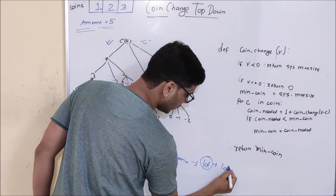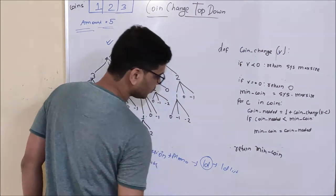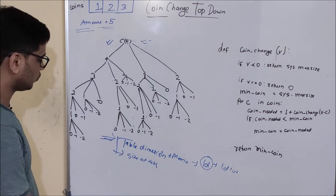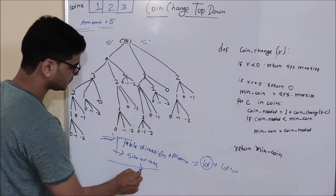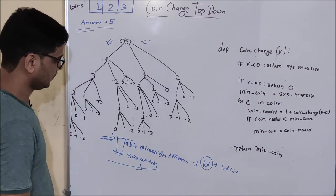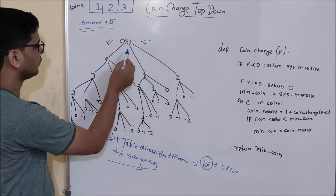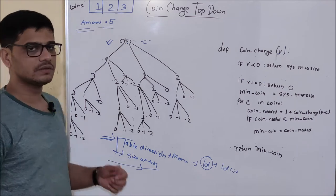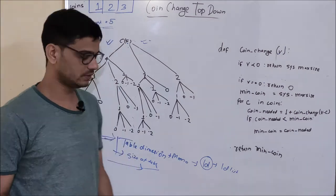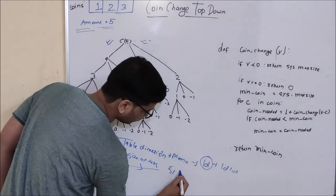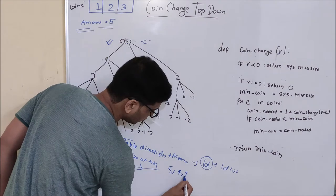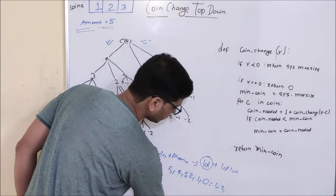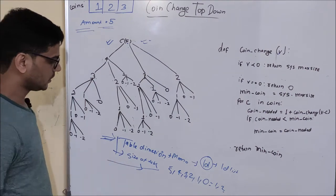It will be a 1D list, as we are using Python to code. The second thing is: what is the size of the table? Looking at the tree, the unique values taken are 5, 4, 3, 2, 1, 0, minus 1, minus 2.